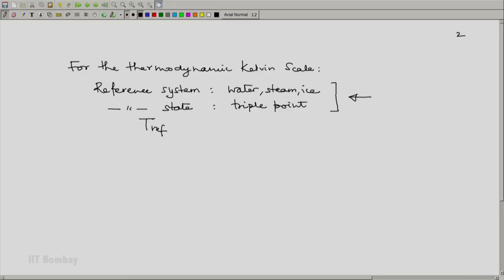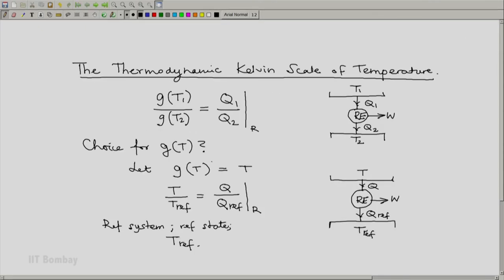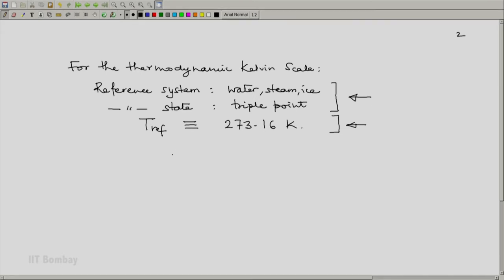And of course we have to define a reference temperature and this is defined to be as in the case of the ideal gas Kelvin scale 273.16 Kelvin. And using this definition and our interpolation form which we have selected to be this, we do the following experiment.